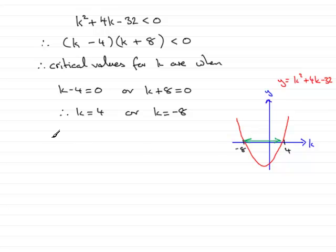So to summarise, then we could say that from the graph, we can see that k must lie between minus 8 and 4 and we can write that as k is in between minus 8 and 4.